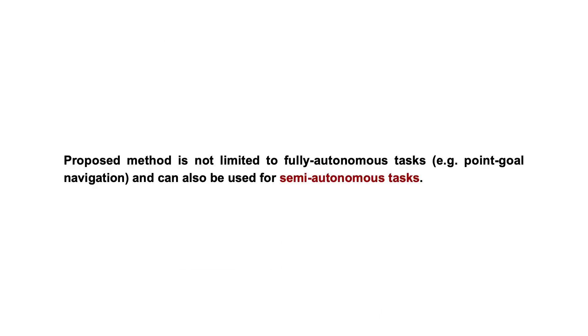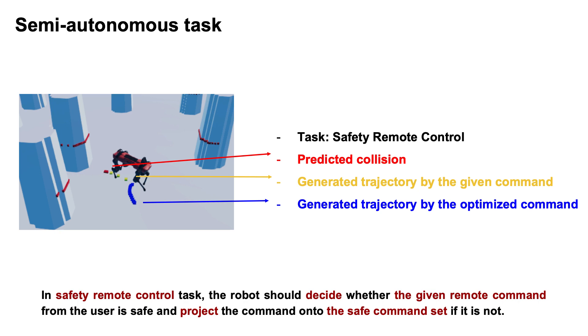Proposed method is not limited to fully autonomous tasks and can also be used for semi-autonomous tasks. In safety remote control task, the robot should decide whether the given remote command from the user is safe and project the command onto the safe command set if it is not.